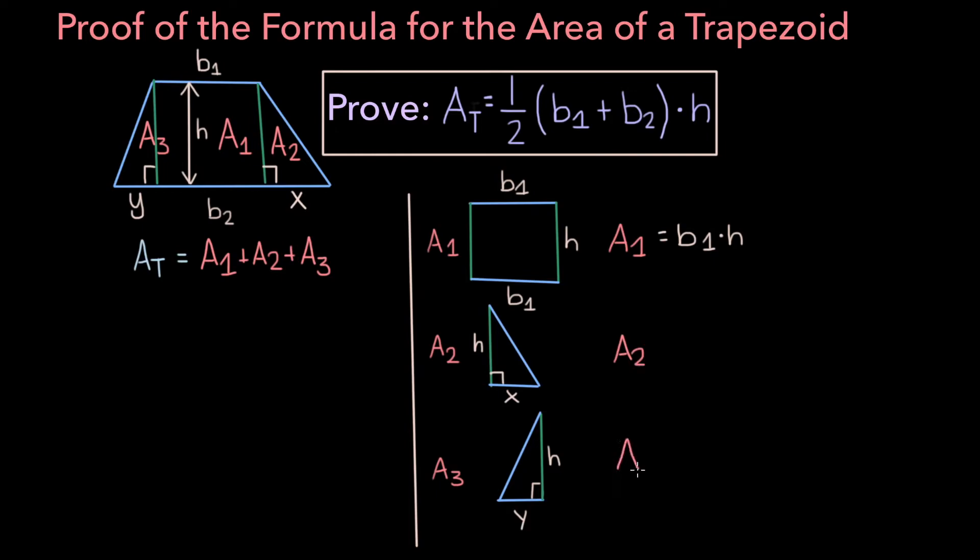A2 and A3 are both right triangles, and the area of a right triangle is one half base times height. And so A2 will be one half times x times h, and A3 will be one half times y times h.